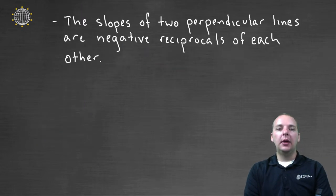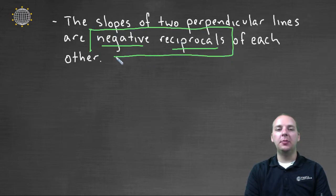So here's how we know. This says the slopes of two perpendicular lines are negative reciprocals of each other. These are two important words, commit these two words to memory. Negative reciprocals of each other. Let me explain what that means.